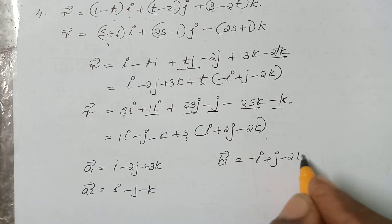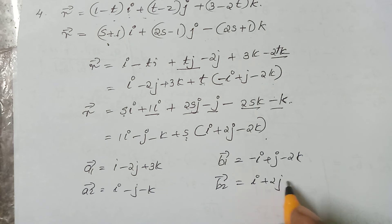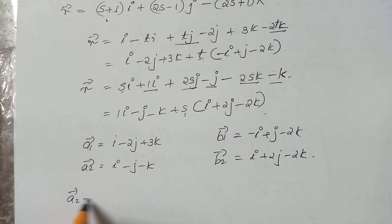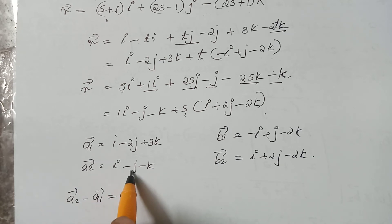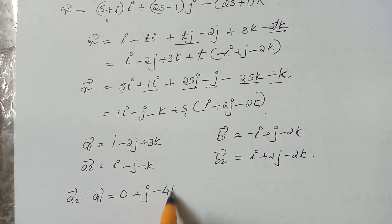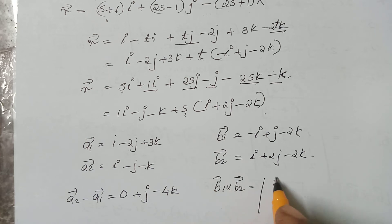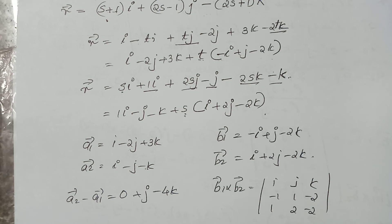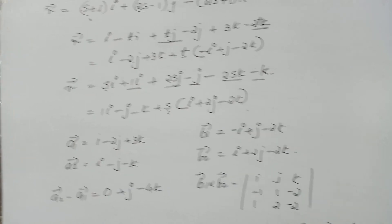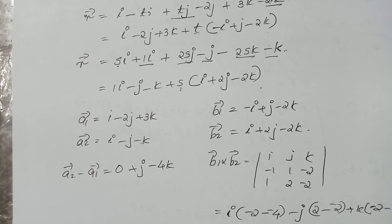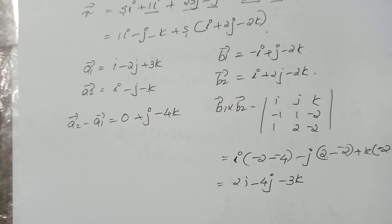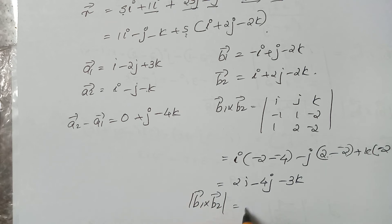The direction vectors are minus i plus j minus 2k. Vector a2 minus a1 gives minus 1 minus minus 2 for i, plus j, minus k minus 3k giving minus 4k. For b1 cross b2, the determinant with i j k, rows minus 1 1 minus 2 and 1 2 minus 2, gives 2i minus 4j minus 3k. The modulus of b1 cross b2 is root of 4 plus 16 plus 9, which equals root 29.